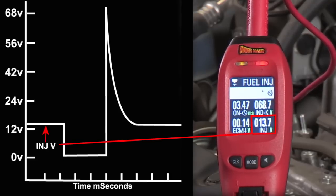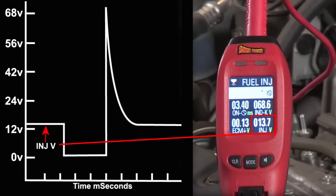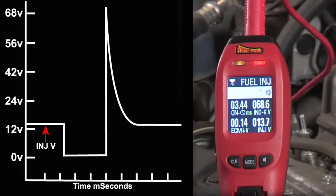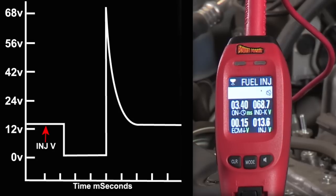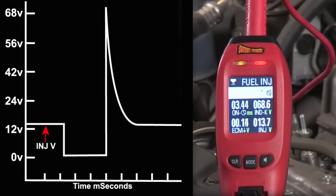And four, injector supply voltage. This is the voltage supplied to the injector rail. This should be near battery voltage. Anything more than a half volt drop should be investigated.